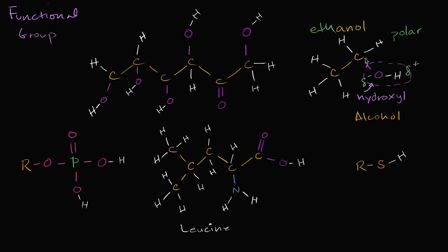A similar functional group with somewhat similar properties is the sulfhydryl group, where you have sulfur instead of oxygen. If you look at the periodic table, sulfur and oxygen both have six valence electrons — they both tend to form two covalent bonds. This group is called a sulfhydryl group. It's similar to a hydroxyl group, with the key difference that sulfur is electronegative but less electronegative than oxygen, so it's still polar, but not quite as polar as a hydroxyl group.